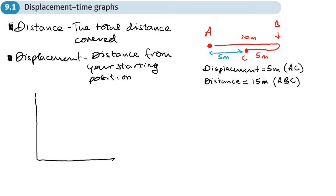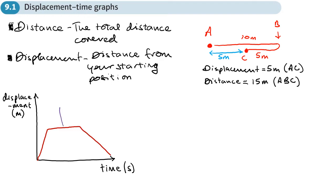We look at displacement-time graphs — GCSE would have called these distance-time graphs. We have time along the x-axis and displacement along the vertical y-axis. Time is normally in seconds and displacement in meters if using SI units. If the graph is flat, that shows the object is stationary — not moving. Time is passing but displacement isn't changing. The gradient of those lines equals the speed.